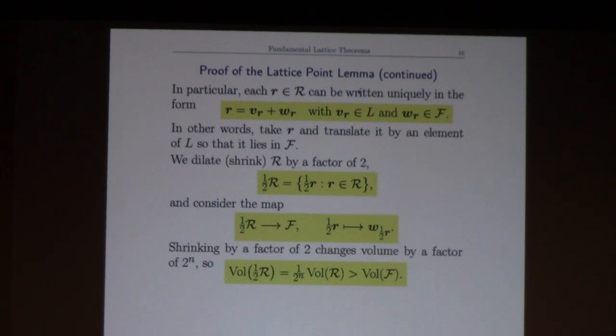The volume of the dilated region is one over two to the n times the original volume because you're in n dimensional space so every direction has been cut by a half and they're in independent directions. And I claim that one over two to the n times the volume of the region is strictly bigger than the volume of the fundamental domain. That's an easy claim to prove because this was the original assumption in the statement of the theorem, except that the two to the n was on the other side of the inequality. Our original assumption was that the region had volume bigger than two to the n times the determinant of the lattice.